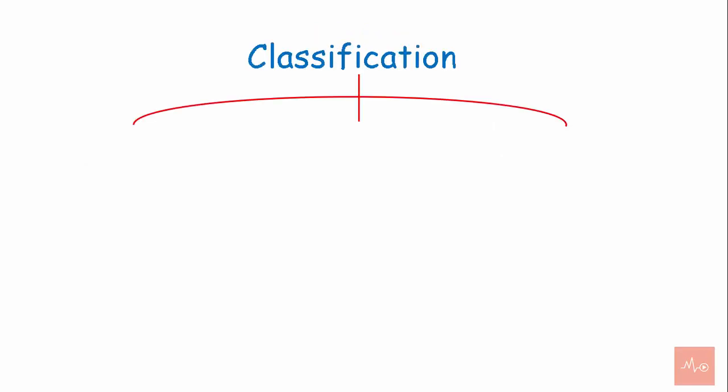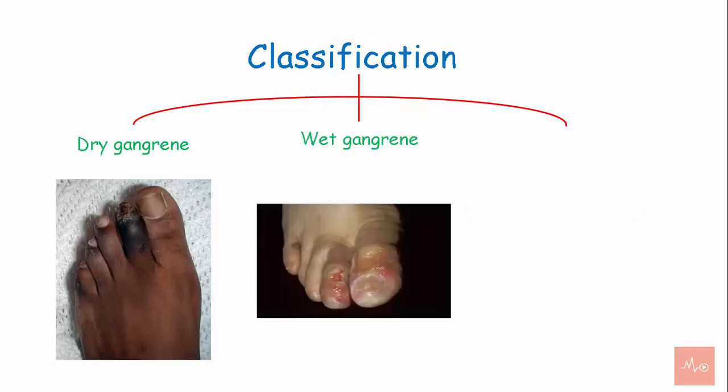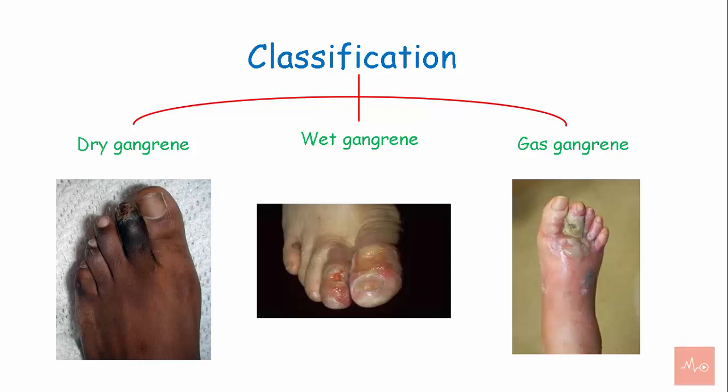There are three types of gangrene: dry gangrene, wet gangrene, and gas gangrene.